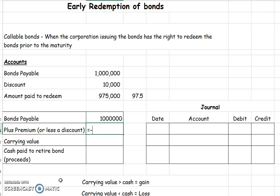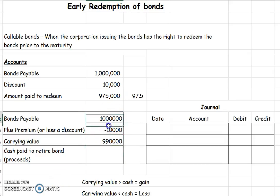We already know that bonds payable plus or minus our premium or discount equals our carrying value. So this table just helps us calculate our carrying value. Then the cash that we are going to pay to retire these bonds — what we just calculated — is $975,000.